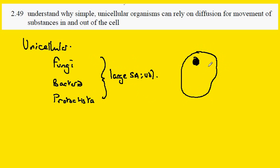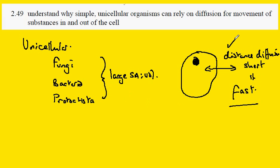So it's got a large surface area to volume ratio and the distance for diffusion is very short and therefore it's fast. So the single-celled organisms can rely on diffusion because the diffusion distance is short, so the diffusion itself is very fast.